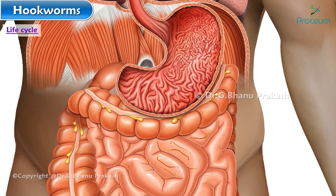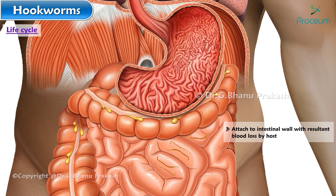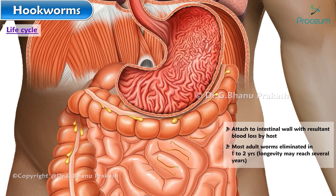Adult worms live in the lumen of the small intestine, typically the distal jejunum, where they attach to the intestinal wall with resulting blood loss by the host. Most adult worms are eliminated in one to two years, but the longevity may reach several years.